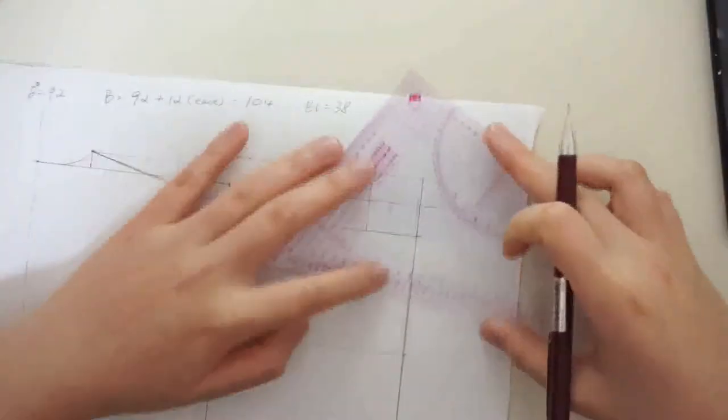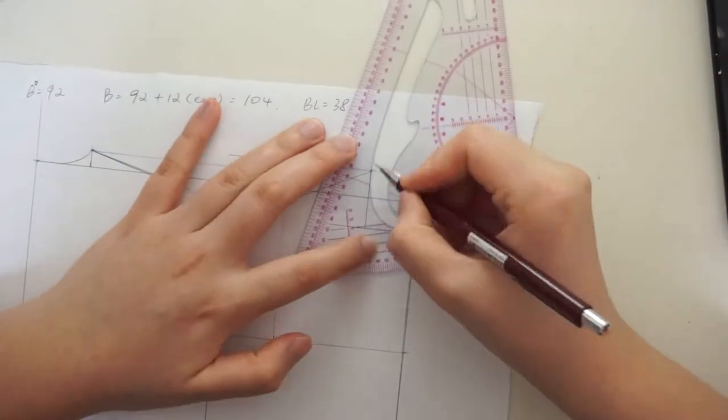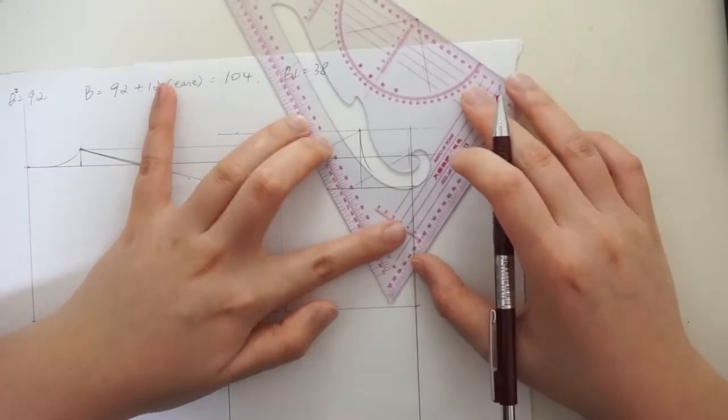Before moving on, I like to round up the neckline first. I usually just wing it using a french curve because the neckline is usually altered anyway when you actually draft a garment.